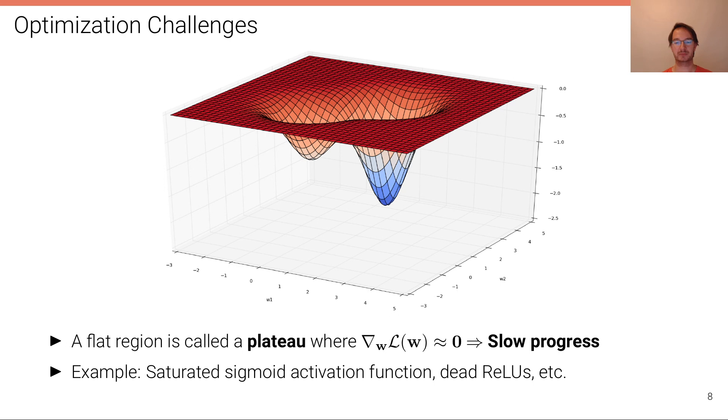Another challenge are plateaus. Plateaus are quite common in training deep models. A plateau is a region, here on the top, where the gradient is almost zero. That means we have very slow progress for our optimizer or maybe even no progress at all. Examples of this include saturated sigmoid activation functions or dead ReLUs, where the gradient is effectively zero or even equal to zero. So plateaus are a problem. The optimization becomes very slow and they occur frequently in deep learning.